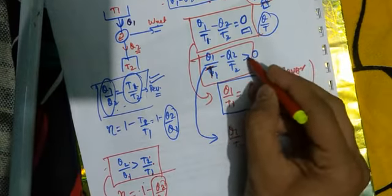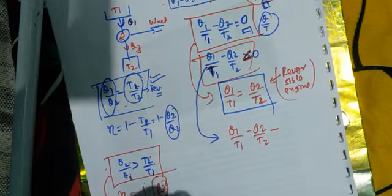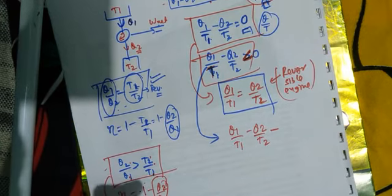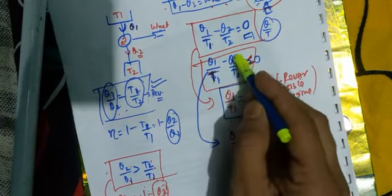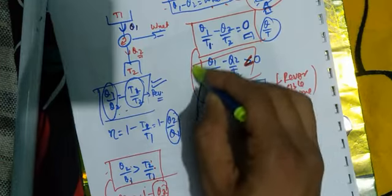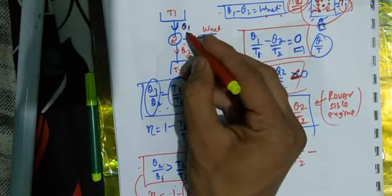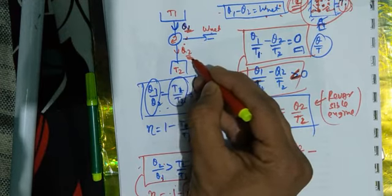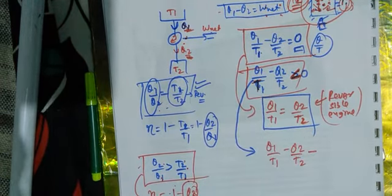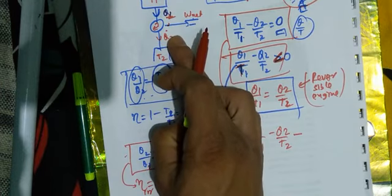There is a slight correction here — this is not greater than 0, this is less than 0. So what is happening within the system that this summation of this quantity is less than zero? Heat given to the system is taken as positive and heat rejected from a system is taken as negative.